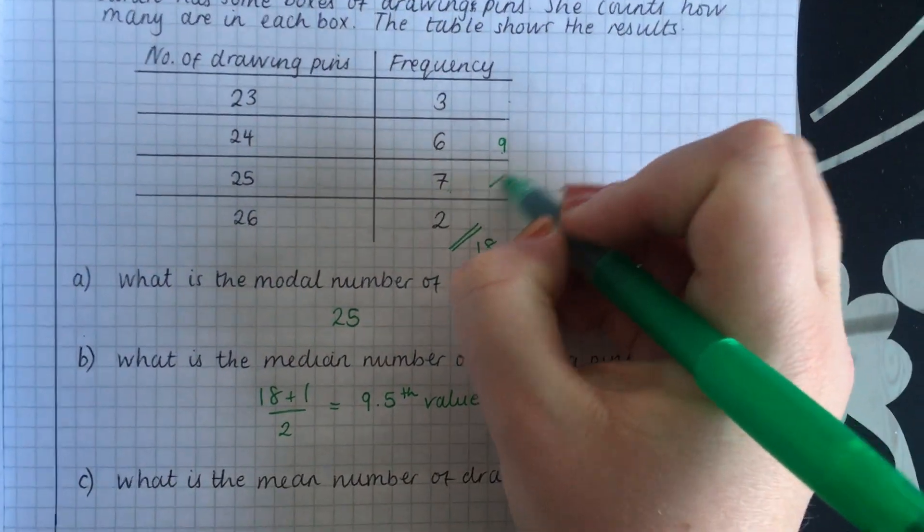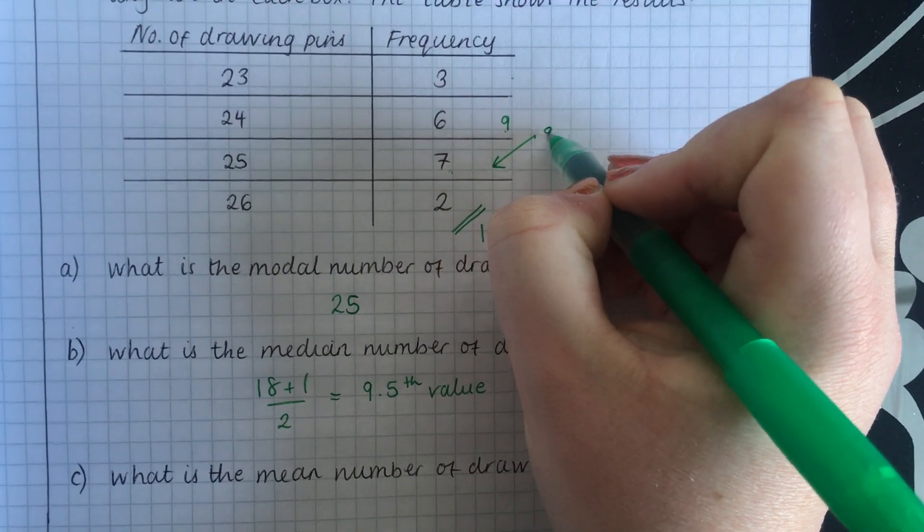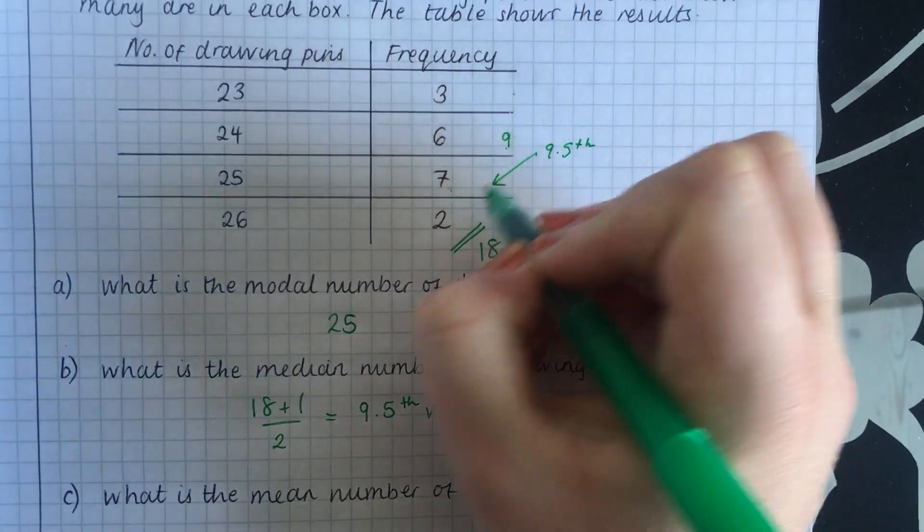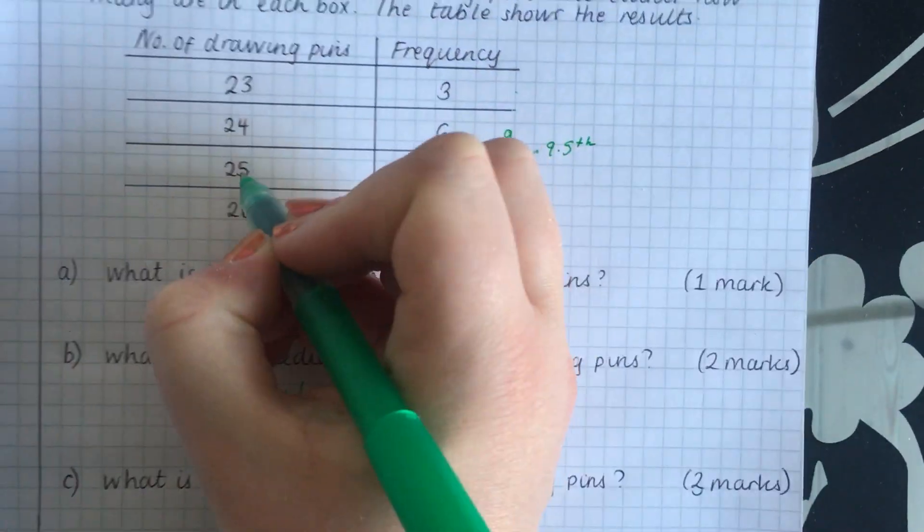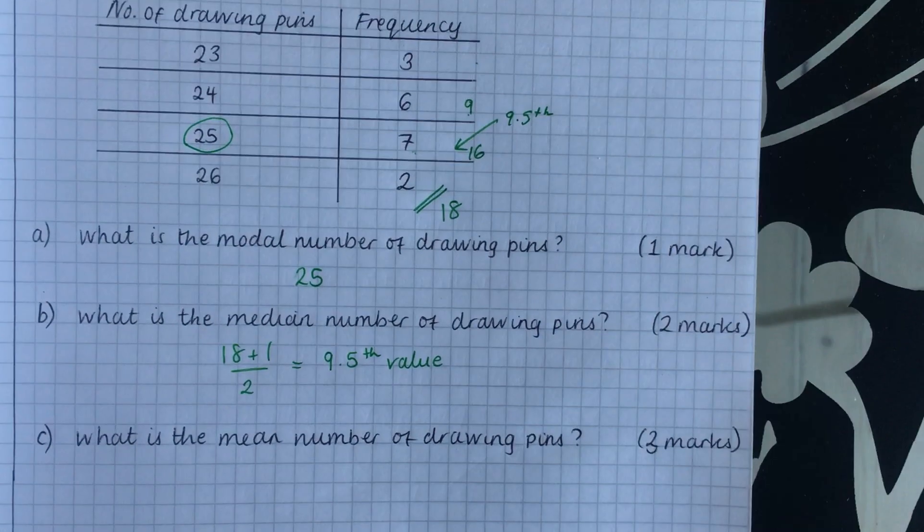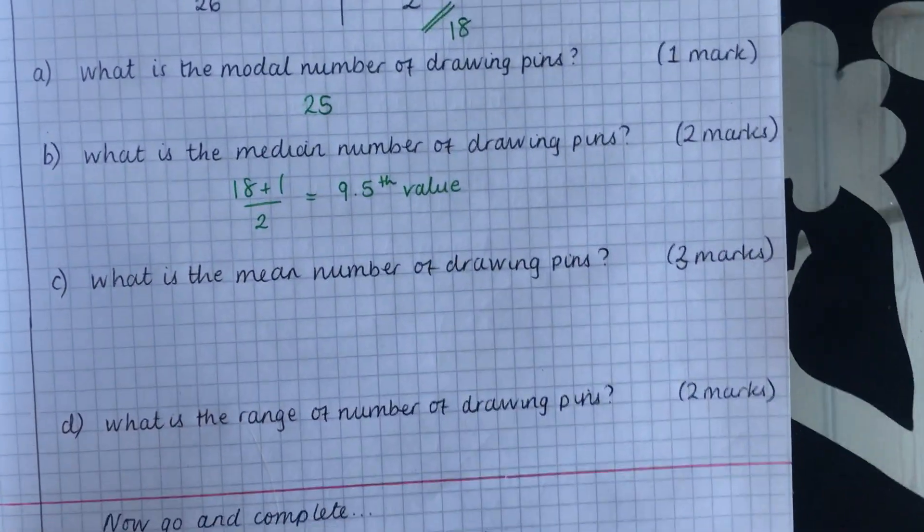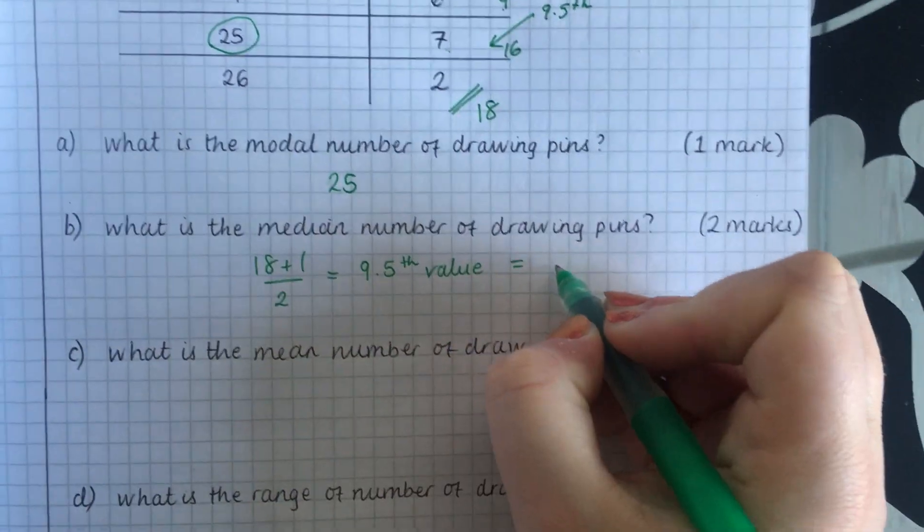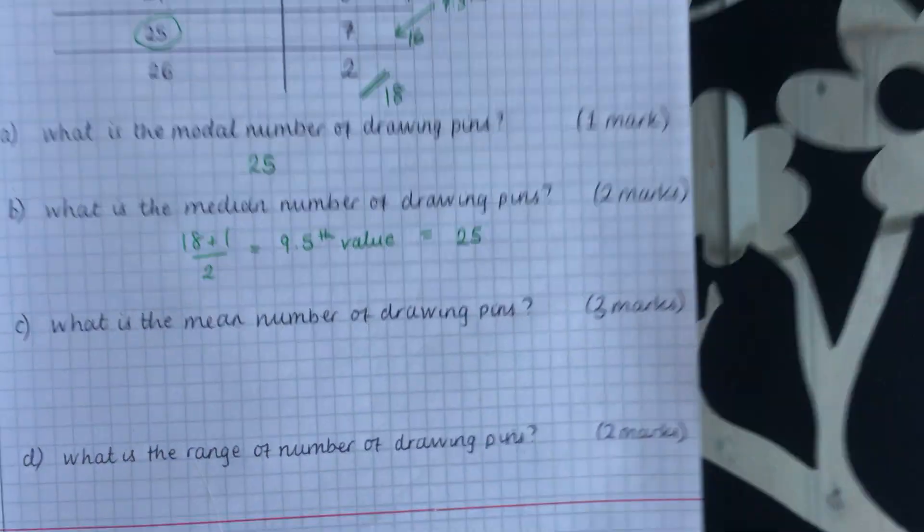So this is where our 9.5th value is because 9 add 7 is 16. And so our 9.5th value is 25. So that is our answer for the median.